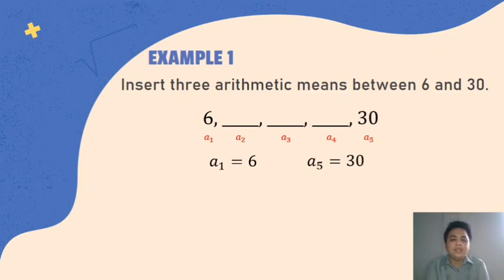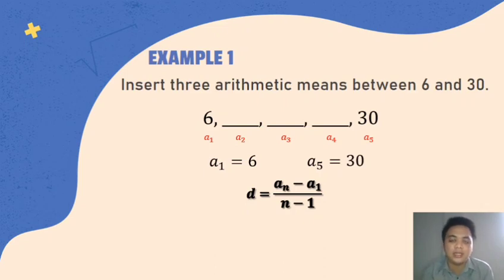So next step is to write the given. So ano ba yung given? So meron ka doon na a sub 1 na equal to 6 and a sub 5 na equal to 30. So now, ano yung hinahanap natin sa problem? Hinahanap yung arithmetic means. Basically, pag hinahanap yung kasunod mo, so halimbawa, ako si number 6, hinahanap yung kasunod ko. So ano yung dapat i-add sa akin para makuha yung kasunod kong number? So yung konseptong yun, pumapasok si letter D, which is the common difference.